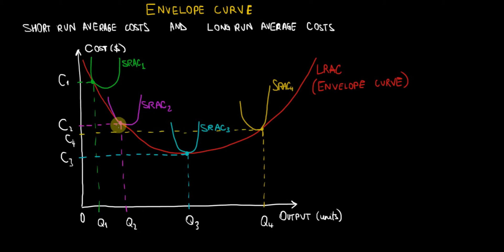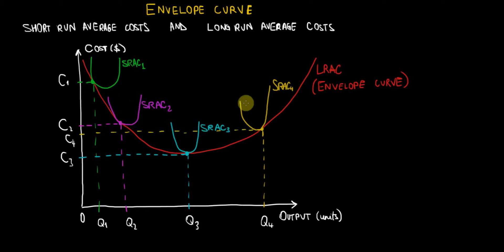The long run is for adjustment purposes — for adjusting the level of fixed factors of production that are being employed. But the production cycle itself is always a short run phenomenon. That's why we have so many short run cycles over this curve.